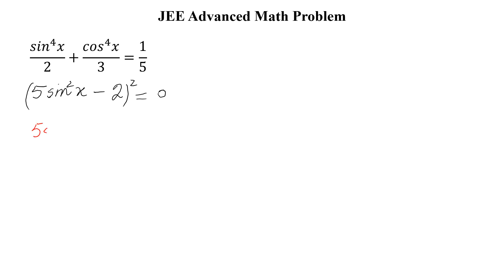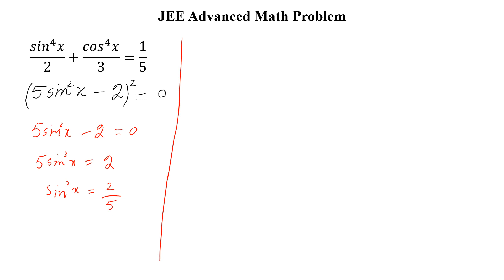Since 5 sine square x minus 2, whole square, equals 0, we get 5 sine square x minus 2 equals 0, so sine square x equals 2 by 5. Therefore cosine square x equals 1 minus 2 by 5, which gives cosine square x equal to 3 by 5.